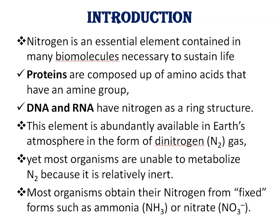Nitrogen is abundantly available in Earth's atmosphere in the form of dinitrogen gas. The air in Earth's atmosphere is made up of approximately 78% nitrogen and 21% oxygen. Air also has small amounts of other gases like carbon dioxide, neon, and hydrogen. So nitrogen is the most abundant naturally occurring gas in the air.